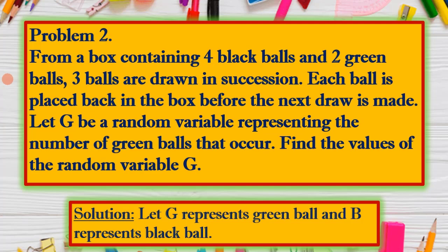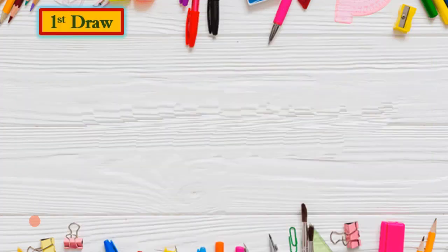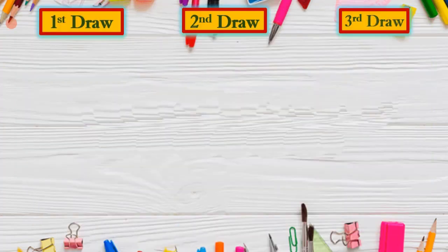Moving on to Problem 2: from a box containing four black balls and two green balls, three balls are drawn in succession. Each ball is placed back in the box before the next draw is made. We let G be the random variable representing the number of green balls that occur. We need to find the values of G. Let G represent a green ball and B represent a black ball.